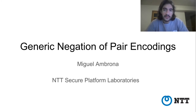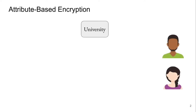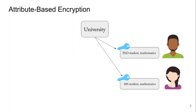Pairing codings are a primitive used to build attribute-based encryption, so I'm going to first start by defining what attribute-based encryption is. In attribute-based encryption there is a master authority — for example, think of a university where there are students, professors, and many users. This authority can provide secret keys to different parties. For example, the university will give a secret key to a PhD student in mathematics, so the key will be associated to those values which are called attributes. A second student might be a master student in mathematics.